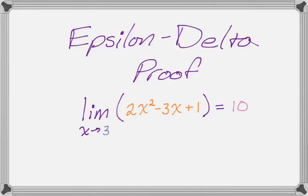In this video we're going to do an epsilon-delta proof of the limit as x approaches 3 of 2x² minus 3x plus 1, which equals 10. I found the limit by substituting in, since it's a continuous function. But now I want to prove that that's the limit, which requires the epsilon-delta proof.